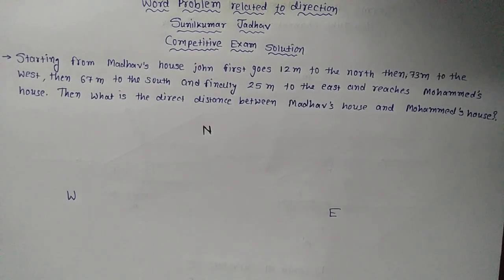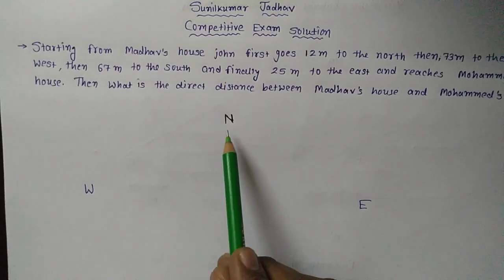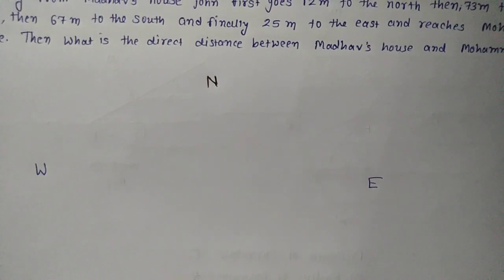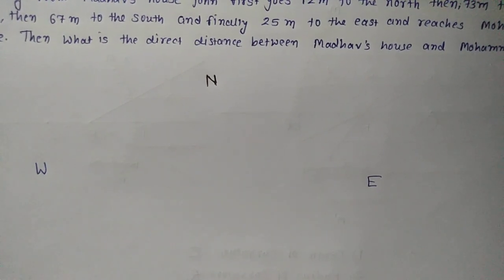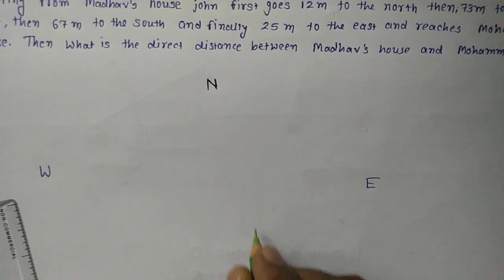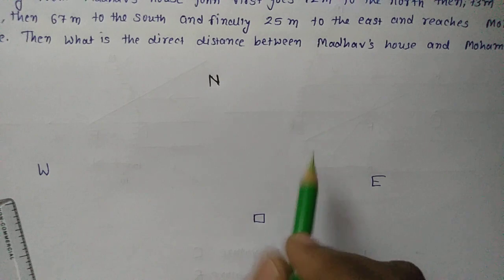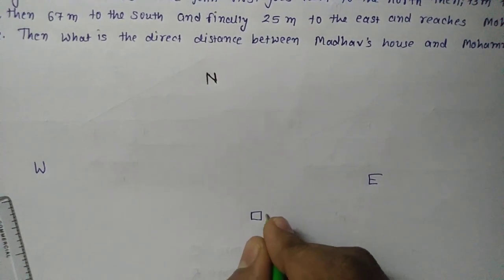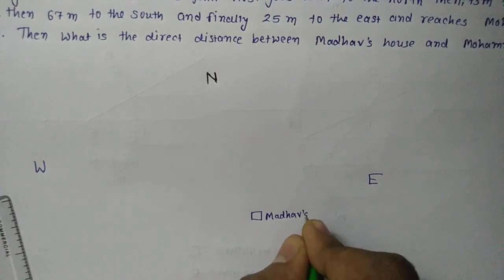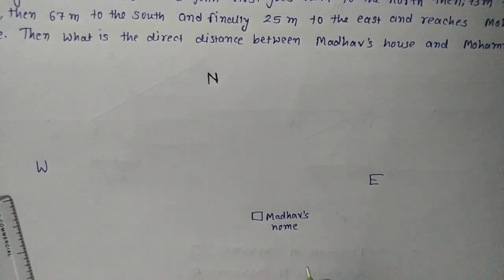First of all, see and focus here. You can see that this is north, south, east, and west — this is the direction that we plot. Now I will put the point here. Let us say this is the house of Madhav — Madhav's house. Let us begin.